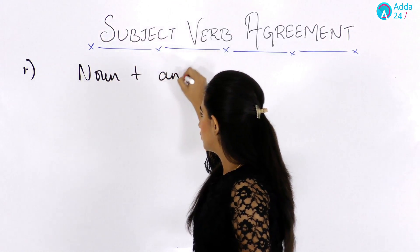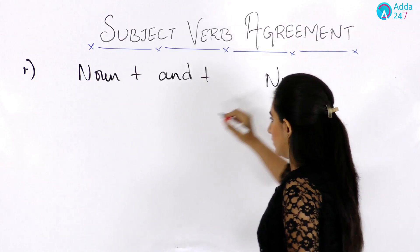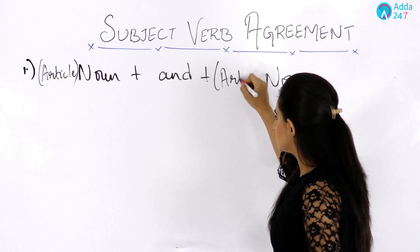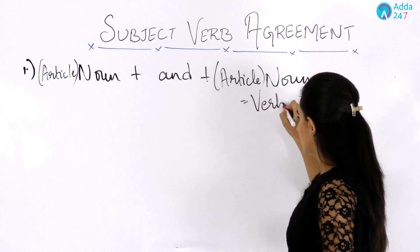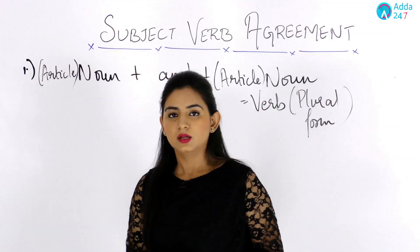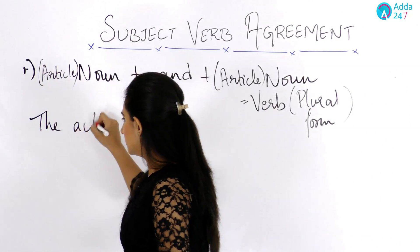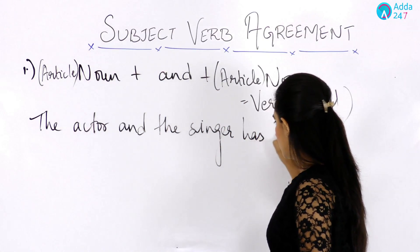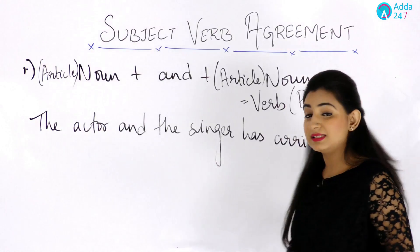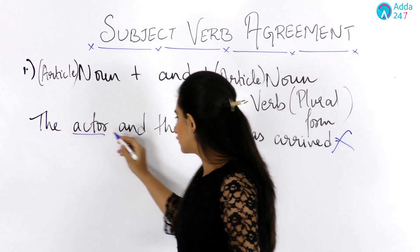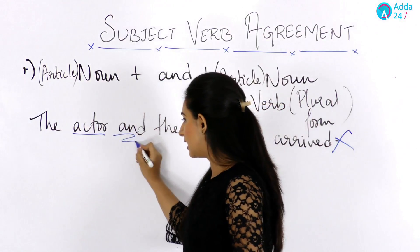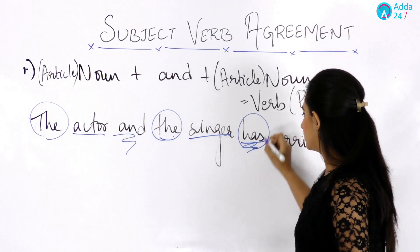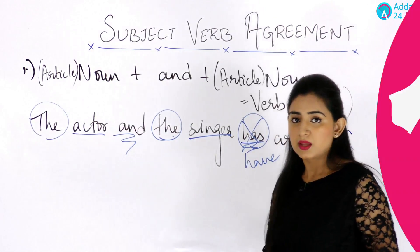The first rule: if we have two nouns joined by 'and' and both are preceded by an article, the verb used should be in plural form. For example, 'The actor and the singer has arrived' is incorrect. Since both subjects — actor and singer — are joined by 'and' and each is preceded by an article, we must use a plural verb: 'have arrived'.